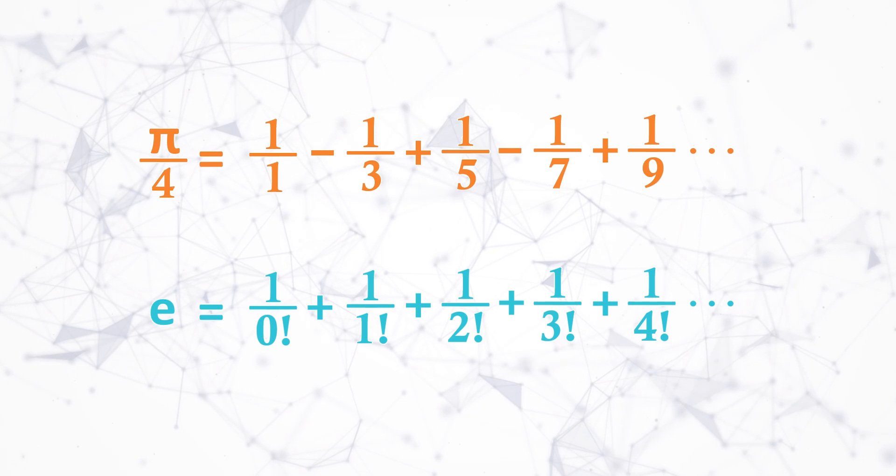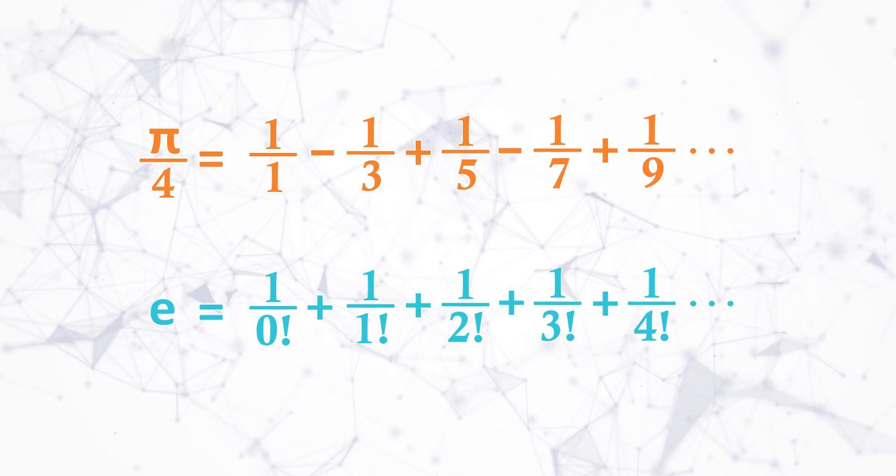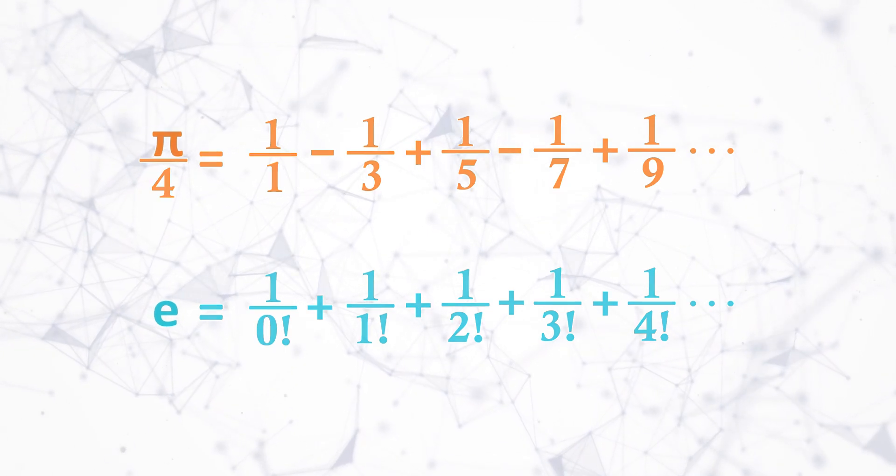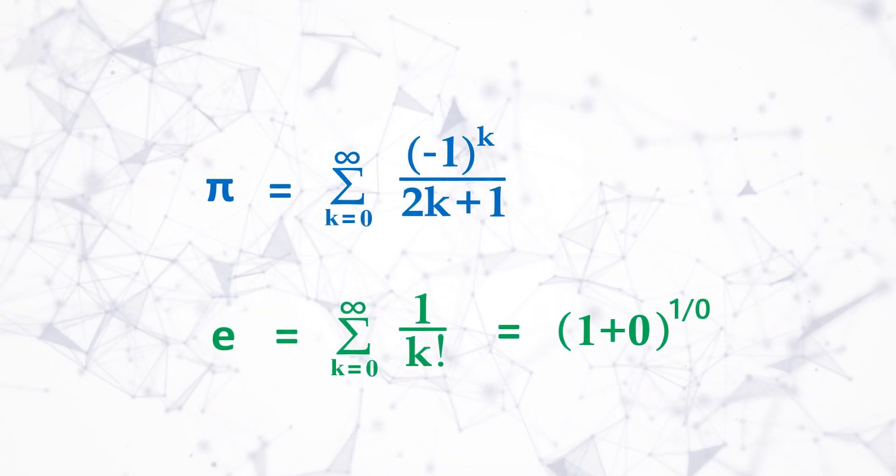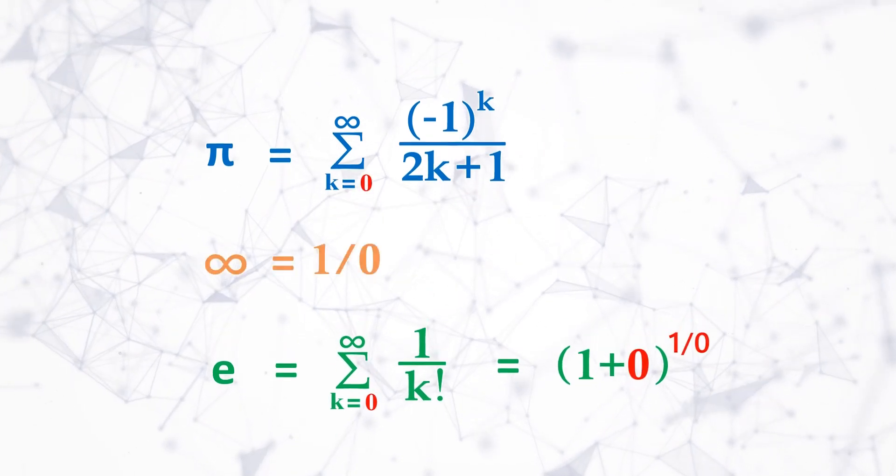And why it is concluded that E and Pi belongs to higher domain than real number system is, any formula that is used to express the value of Pi or E will have one common entity and that is 0 or inverse of 0 that is infinity.